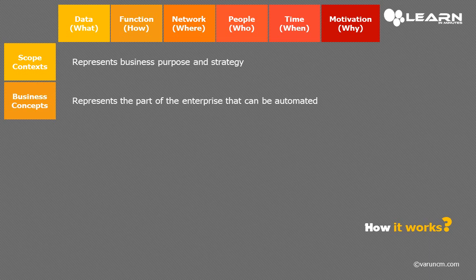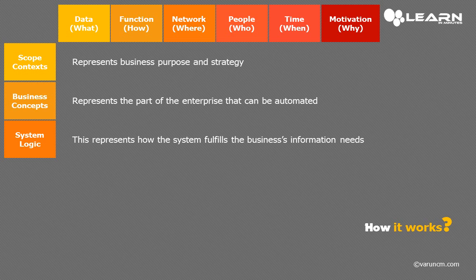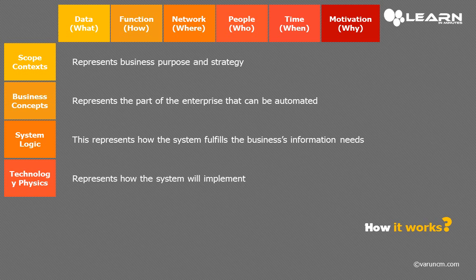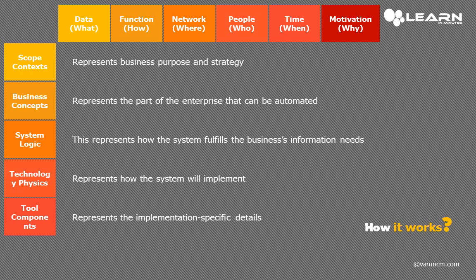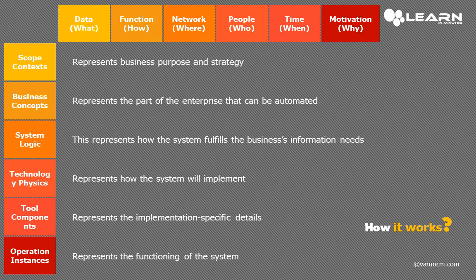Number two is business concepts, which represents the heart of the enterprise that can be automated. Number three is system logic, which represents how the system fulfills the business information needs. Number four is technology physics, which represents how the system will implement.